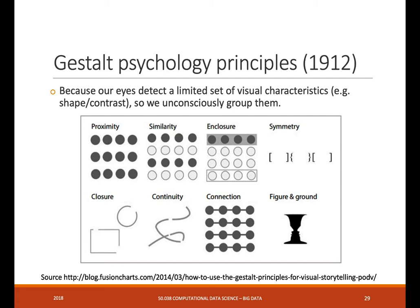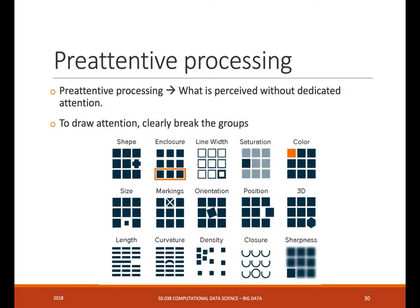So there's some Gestalt principles that we can find in psychology. And they really say that the whole is more than the sum of its parts. Because our eyes detect a limited set of visual characteristics, we unconsciously group them. So also keep this in mind that we can use grouping to make our data clear. If we have elements here that are colored, our eyes will consider them as groups. This will probably be perceived as a rectangle, while it is not a rectangle. And this will be considered as a circle because we have this principle of closure. Just keep in mind that you perceive holistically based on these principles.